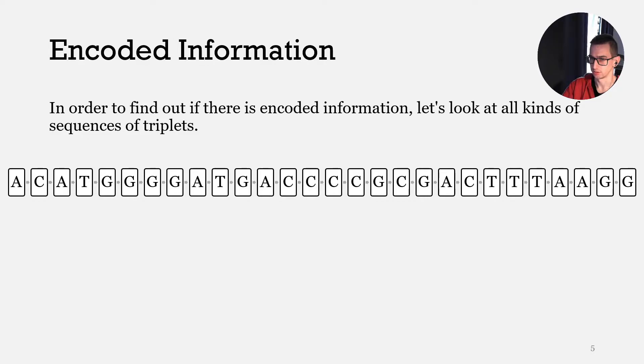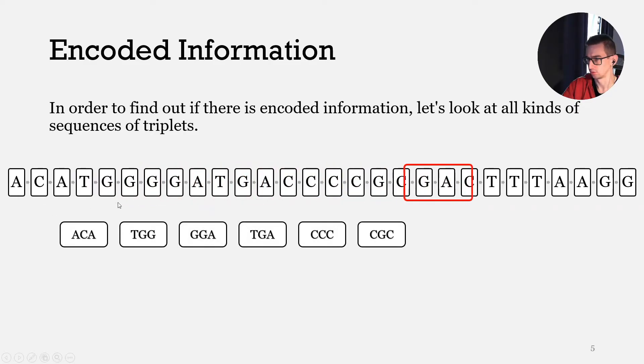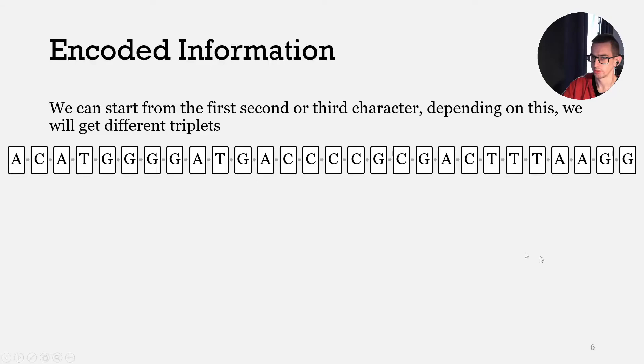Let's look at this animation. We can start from the first three symbols and go with a step size equal to three. Here we start from the first triplet and go one by one through all triplets, and we will get such a sequence.